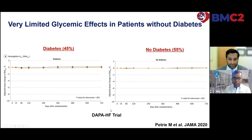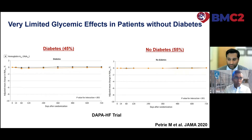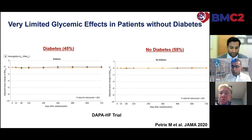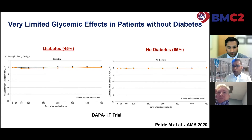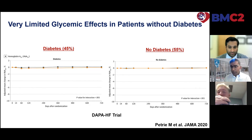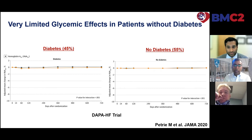In DAPA-HF, the 45% of patients with diabetes showed virtually no between-arm differences, just a subtle reduction in A1C. In those without diabetes, there is no effect on glycemia and no hypoglycemia. In the 55% of patients with heart failure without diabetes, I do not counsel about glucose, I don't ask them to obtain glucometers, and there's no need to monitor A1Cs in these patients.